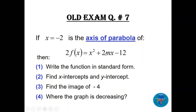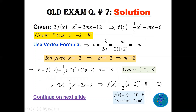Question seven: given that x = -2 is the axis of symmetry of the parabola 2f(x) = x² + mx - 12. First divide by 2 so f(x) = (1/2)x² + (m/2)x - 6, giving a = 1/2, b = m/2, c = -6. Then h = -b/2a = -m. Since the axis is x = -2, we have h = -2, so -2 = -m, meaning m = 2.